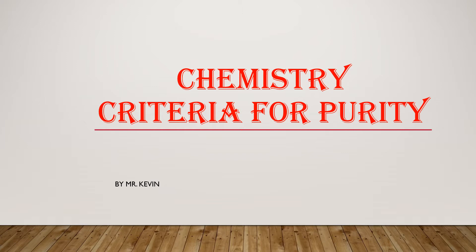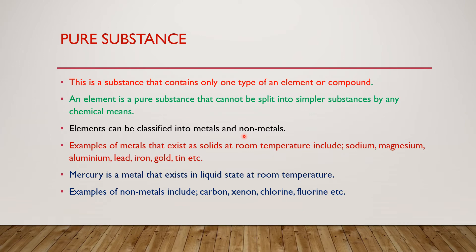Now we're going to start by defining what is a pure substance. A pure substance is a substance that contains only one type of an element or a compound. We mean a substance that contains one type of an element — for example, if it is oxygen, we can say that oxygen is a pure substance.